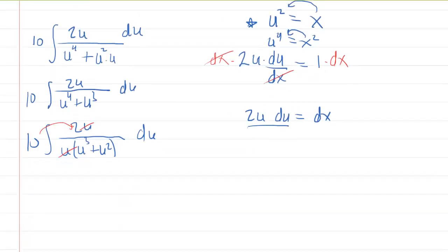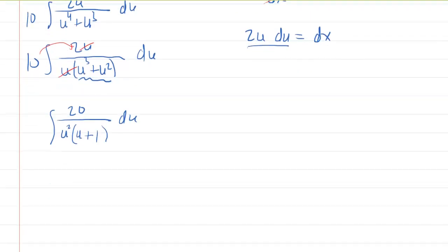And what's rather convenient here is the u in the numerator and the u in the denominator cancel out. We can then multiply the 10 times the 2. So we'll have the integral of 20 over. Now, it's also going to be convenient to rewrite u cubed plus u squared by factoring out a u squared. So you have u squared times u plus 1 du. And we finally have it in a form in which partial fractions will be useful to us.